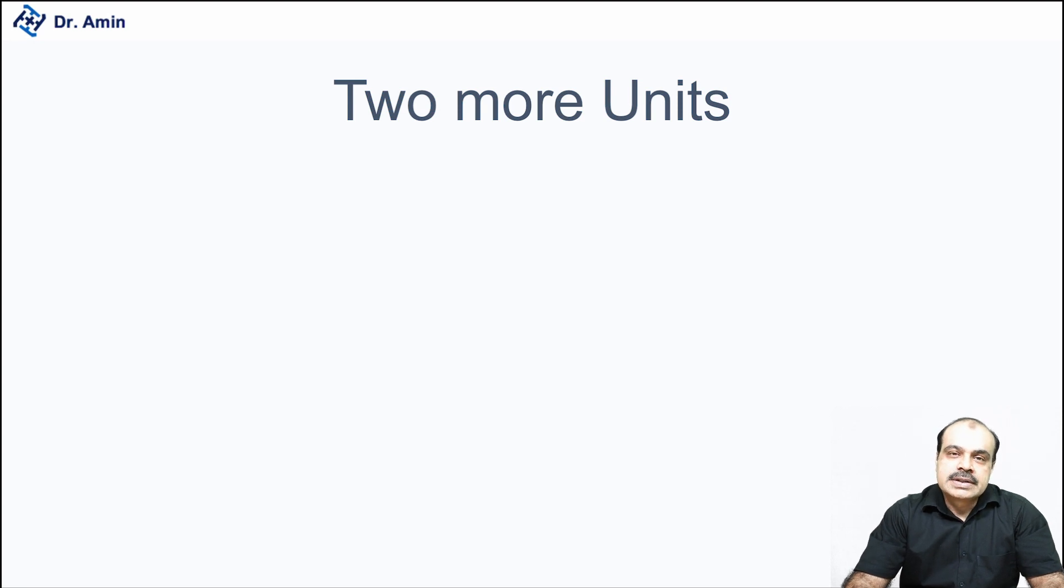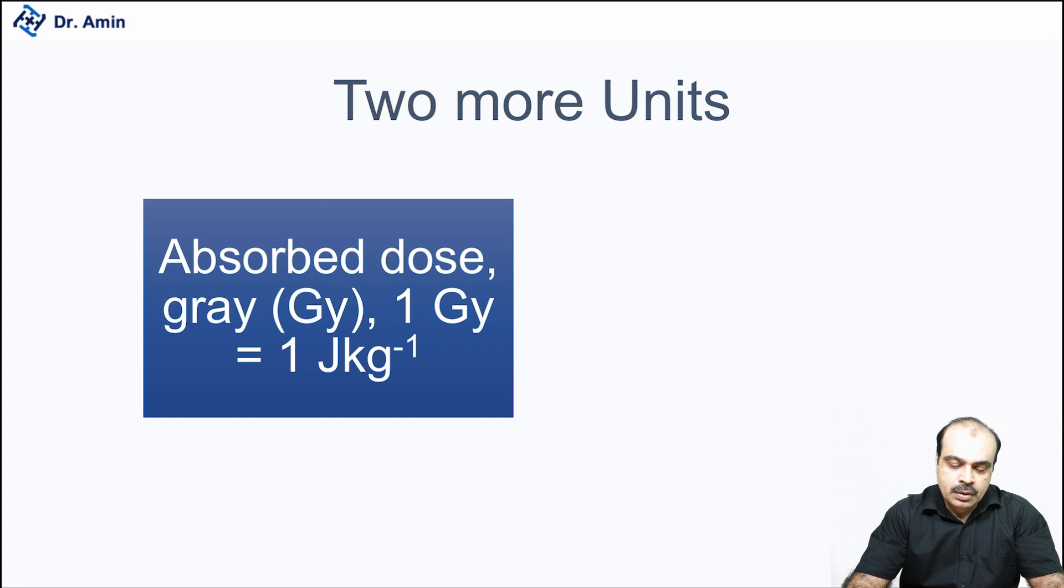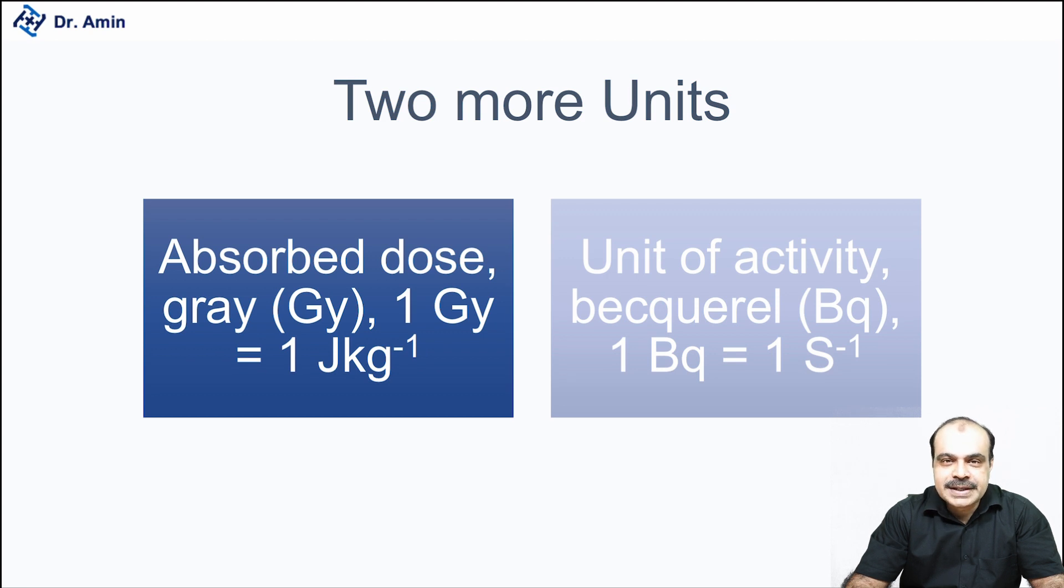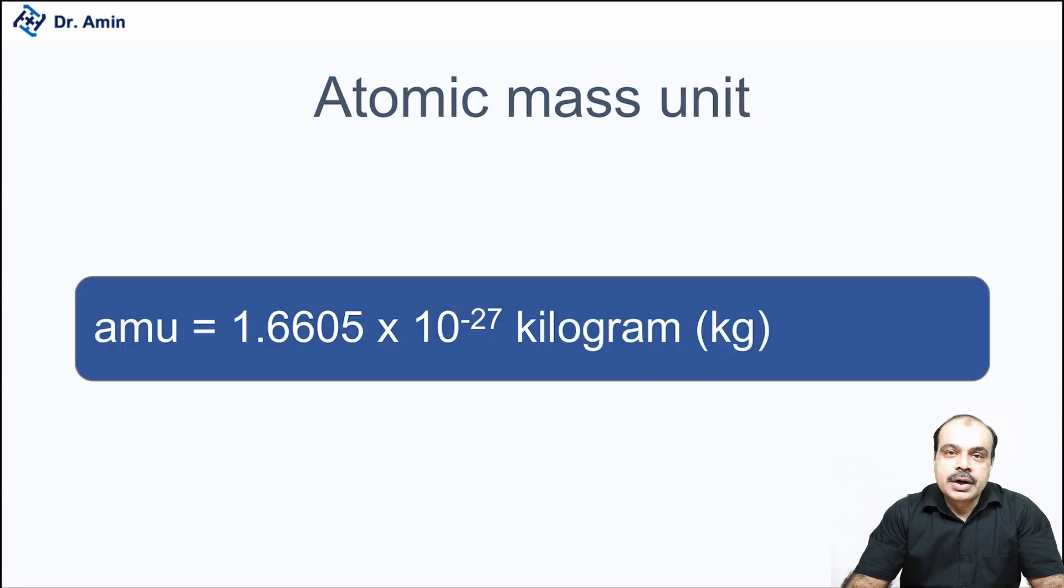Going further, two more units are going to be introduced. The absorbed dose, which we will be using in radiation protection and assessment of absorbed doses in employees and patients. And then we have the unit of activity, which is the mainstay of nuclear medicine, which states that one becquerel equals one disintegration per second. We have another unit, the atomic mass unit, and atomic mass unit is important because these atomic structures are very small. So we can't use just kilogram for them. So what we do is we derive another unit, which is one amu, equal to 1.6605 × 10⁻²⁷ kilograms. So it's a very tiny amount of weight which we will be using in the next slides.